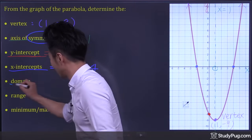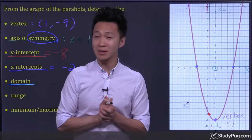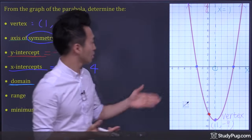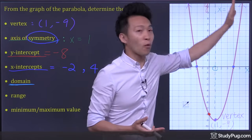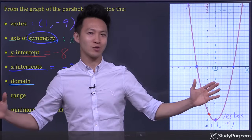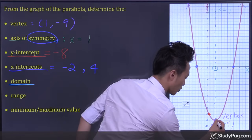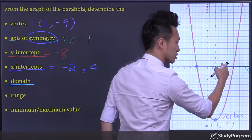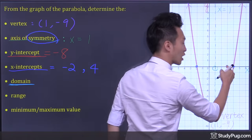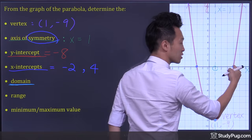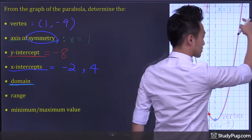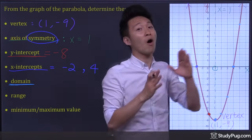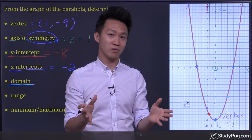Next, domain. By definition, domain is the set of x values for which a function is defined. As we can see, a parabola is defined for all x values. For example, this point has x value positive 1, this point x equals positive 2, positive 3, positive 4, positive 5 — so a parabola is defined for all positive integers for x.